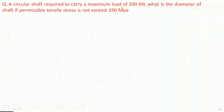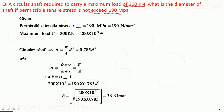A circular shaft is required to carry a maximum load of 200 kilo Newton. What is the diameter of the shaft if the permissible tensile stress is not to exceed 190 mega Pascal? The permissible tensile stress is 190 MPa, that is 190 Newton per millimeter square, and the maximum load is 200 kilo Newton, that becomes 200 × 10³ Newtons.